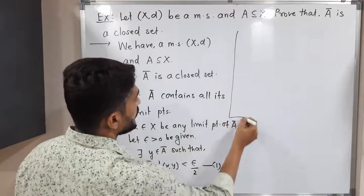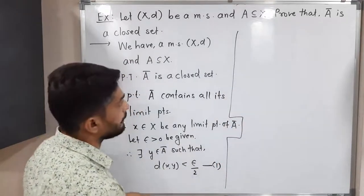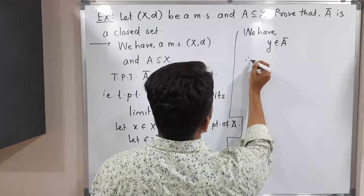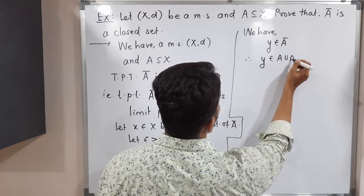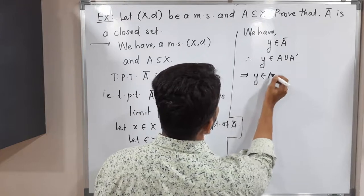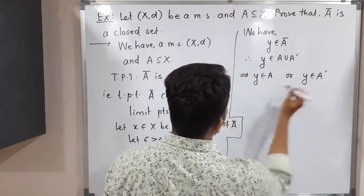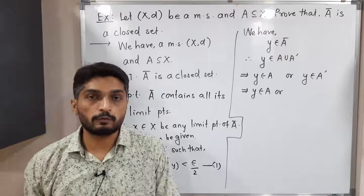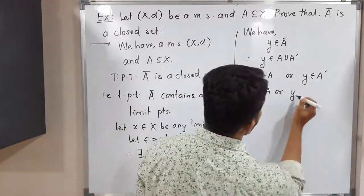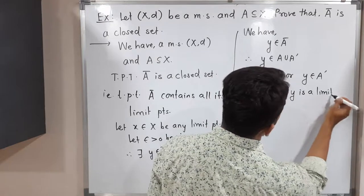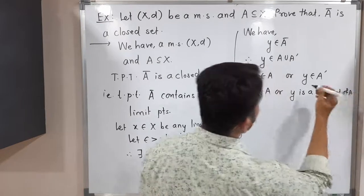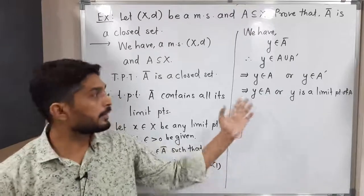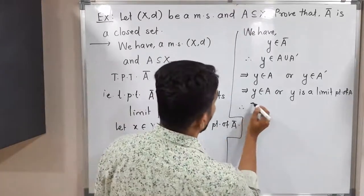We have found y belonging to Ā. From the previous video, we know that Ā = A ∪ A', where A' is the derived set (the set of all limit points of A). So y belongs to A or y belongs to A'. If y belongs to A', that means y is a limit point of A.